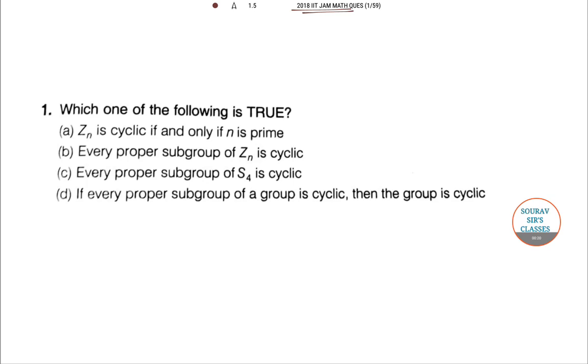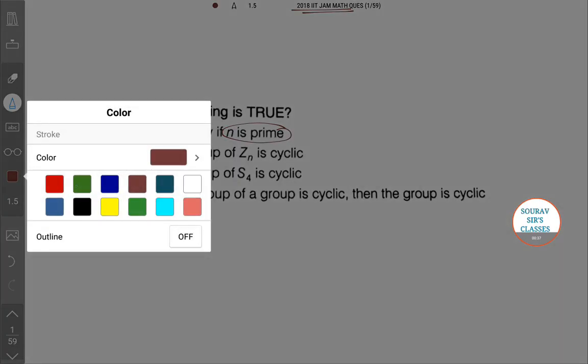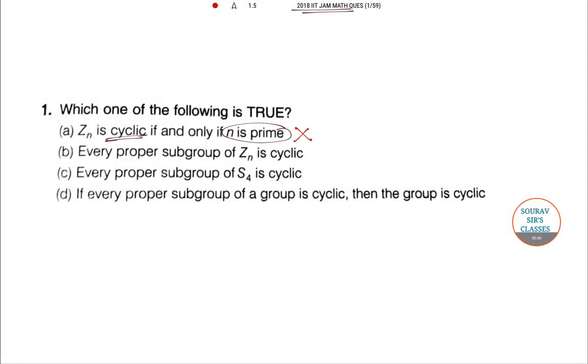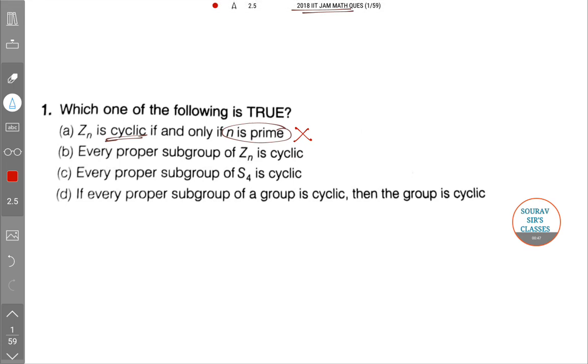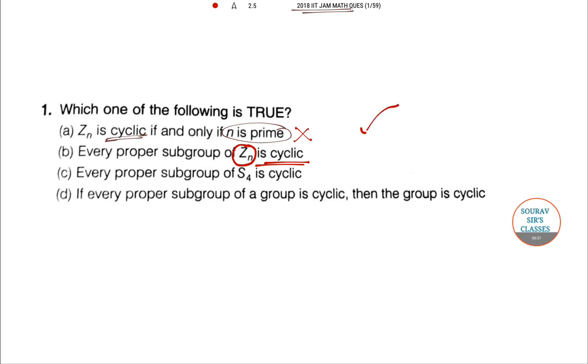First, Z_N is cyclic if and only if N is prime. Now, cyclicity is not dependent on N being prime or non-prime, so the first option is wrong. Coming to the second option, every proper subgroup of Z_N is cyclic. Yes, every proper subgroup of Z_N is cyclic—you can see my cyclic group videos on this channel. So this is true, so we don't need to go to further answers.